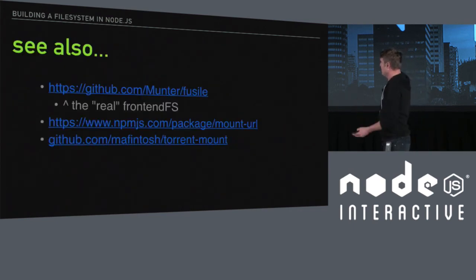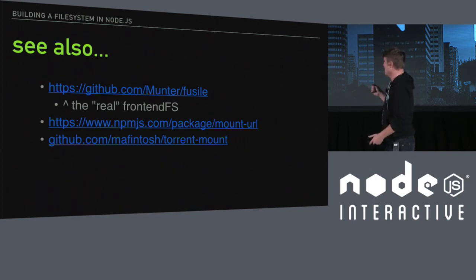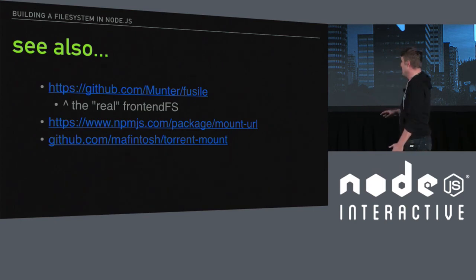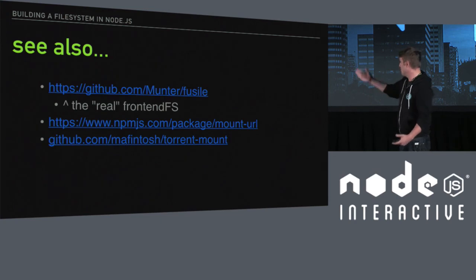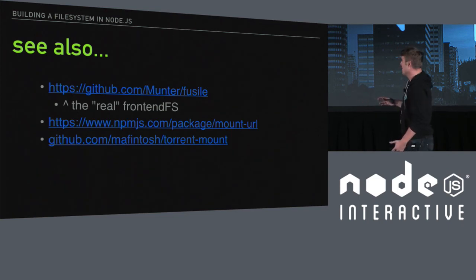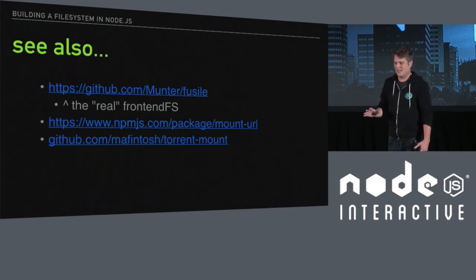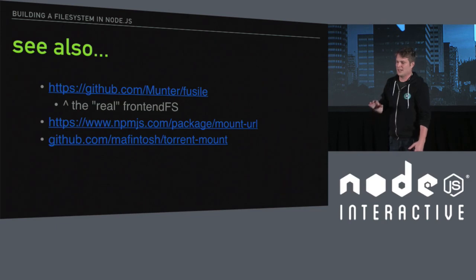I wanted to point everybody to three great projects. First, the real front-end FS by Peter Mueller called Fusile, which does ES6 transformations in the file system — super cool and super worth checking out. Max Ogden also has one called MountURL, which mounts a remote URL. And the author of Node Fuse Bindings also has one — and I'm curious if this is actually why they created it in the first place — that actually mounts BitTorrents. A lot of really cool projects and a lot of creativity around this space, and I think between this and the existing documentation, no one regardless of your background should be very intimidated to roll your own or hack around with it.